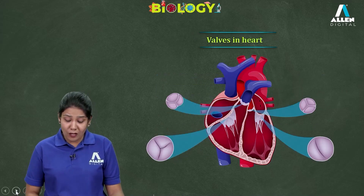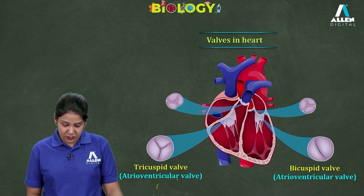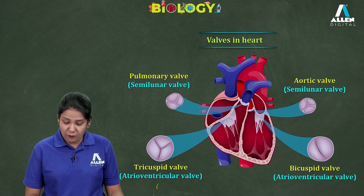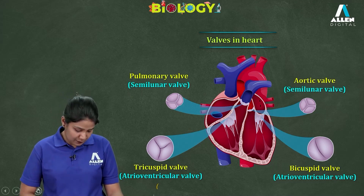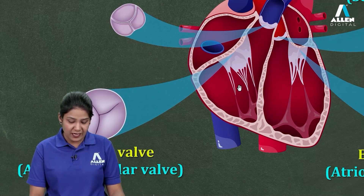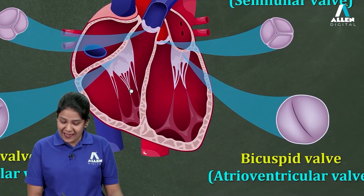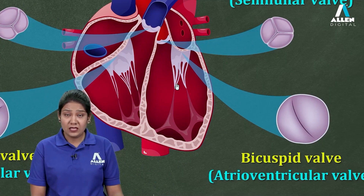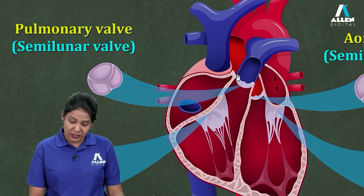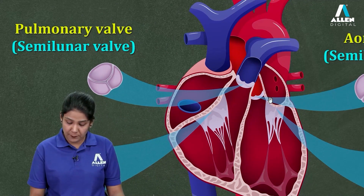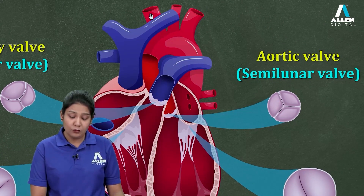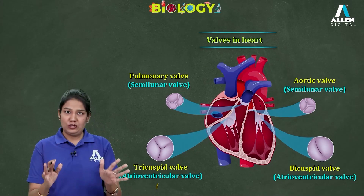We can locate all the valves on the diagram. The tricuspid and bicuspid are the atrioventricular valves. The semilunar valves are the aortic and pulmonary valves. We can clearly see the tricuspid valve between the right atrium and right ventricle, the bicuspid valve between the left atrium and left ventricle, the pulmonary valve at the initial point of the pulmonary trunk, and the aortic valve directing blood flow towards the aorta.